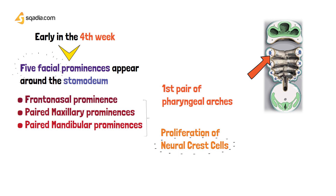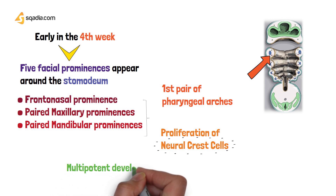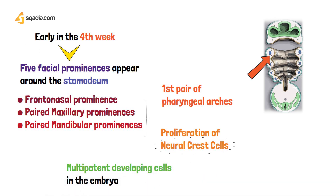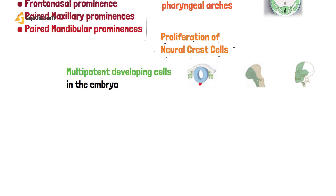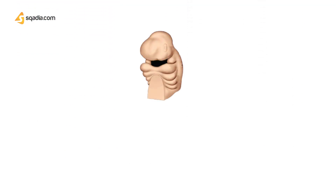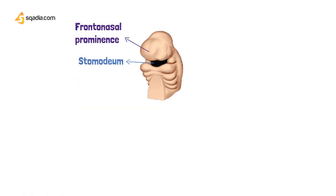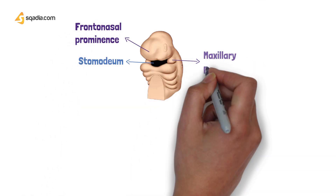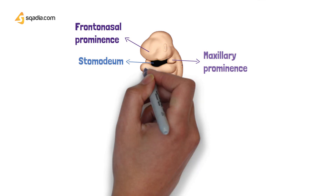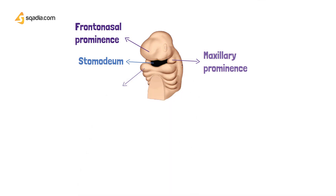This also occurs due to the proliferation of neural crest cells, which are multipotent developing cells present in the embryo. Here in the developing embryo illustration, we can see the stomodium — the future site for the mouth — the frontonasal prominence, just lateral to it the maxillary prominence, and the mandibular prominences caudal to the stomodium.